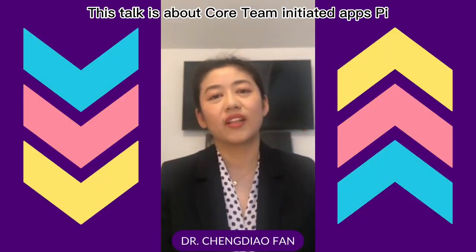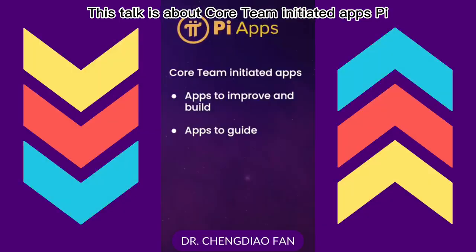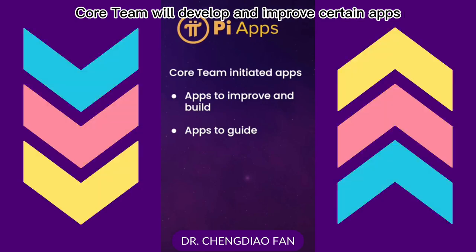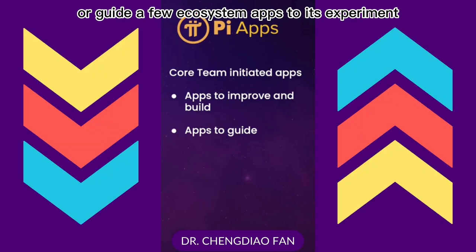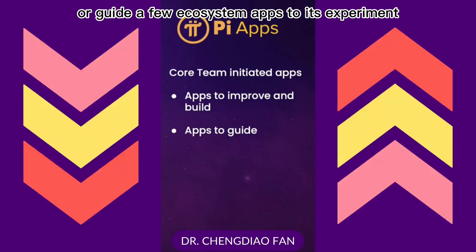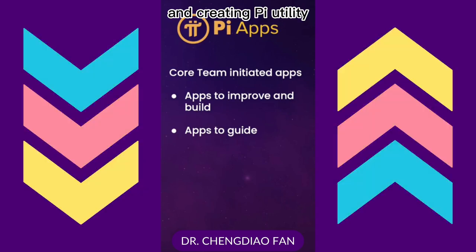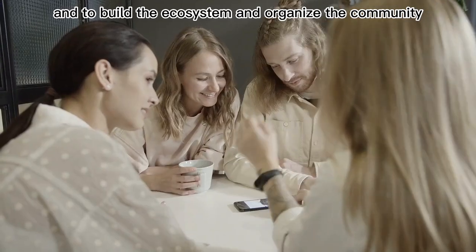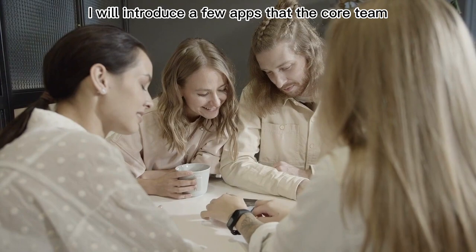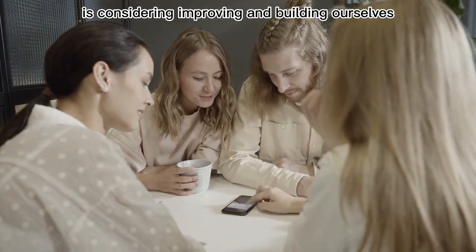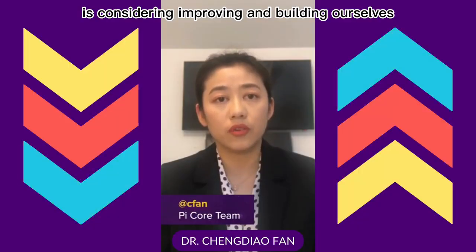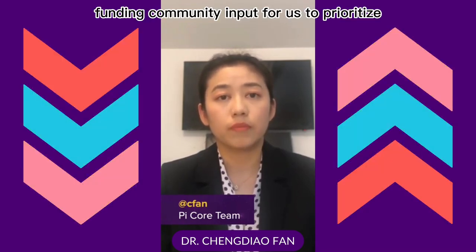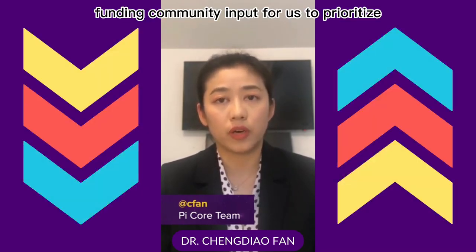Hi Pioneers! This talk is about core team-initiated apps. Pi core team will develop and improve certain apps, or guide a few ecosystem apps to experiment and create Pi utility, and to build the ecosystem and organize the community. I will introduce a few apps that the core team is considering improving and building ourselves, or guiding ecosystem third-party developers to build, pending community input for us to prioritize.